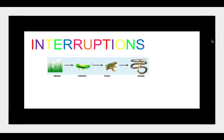Well, a reduced number of crickets means that the toads have less food to eat, so this causes the number of toads in the area to decrease. And the reduced number of toads means that the snakes have less food to eat, so this causes the number of snakes in the area to decrease. In conclusion, the disappearance of just one species can hugely affect the entire ecosystem.